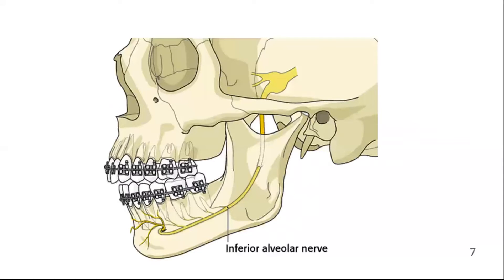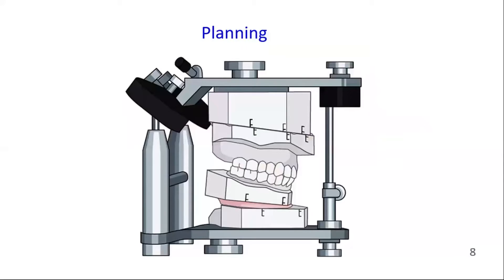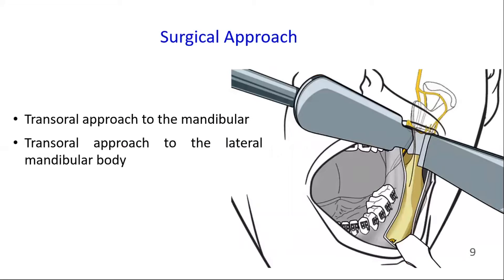The obvious problem of this procedure is the close proximity of the osteotomy lines and the neurovascular canal. Care should be taken not to damage the inferior alveolar nerve during this procedure. Do a proper planning of orthognathic surgery. For this procedure, the transoral approach to the mandibular angle and transoral approach to the lateral mandibular body is used.